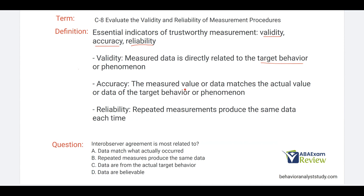Accuracy says the value or the data that you measure match what actually occurred. So if nail biting occurred 10 times, to be accurate, I would need to record 10 times. And then reliability says repeated measurements produce the same data each time, meaning if every single time I measure nail biting that happens 10 times, I'm getting that same result each and every time.